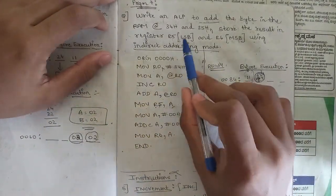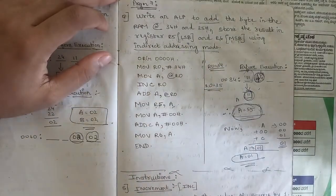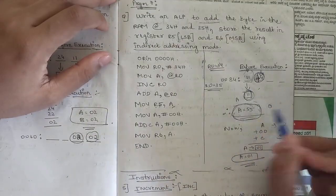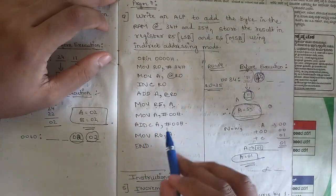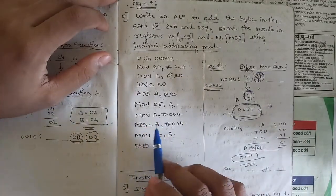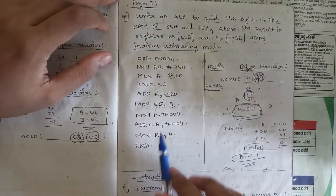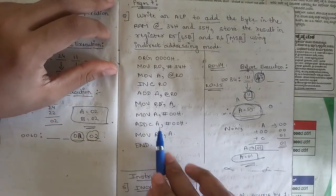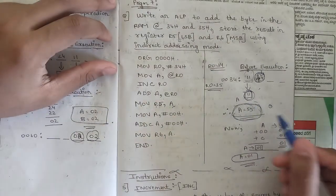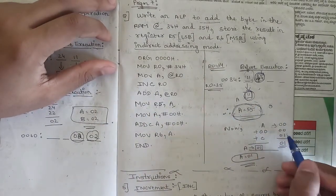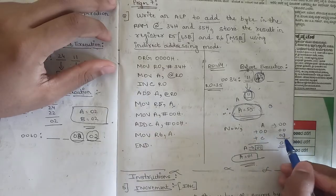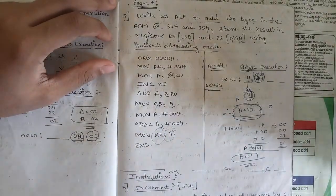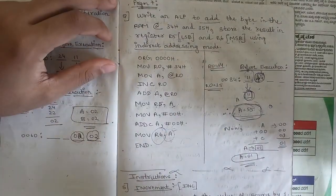Since adding these two values generates no carry, the carry is zero. To store the carry in R6, we first clear A using MOV A, #00H, then ADDC A, #00H — add with carry. In this case the carry is zero, so A becomes 00H + 00H + 00H = 00H. Then MOV R6, A to store that in R6. This completes the addition program using indirect addressing mode.